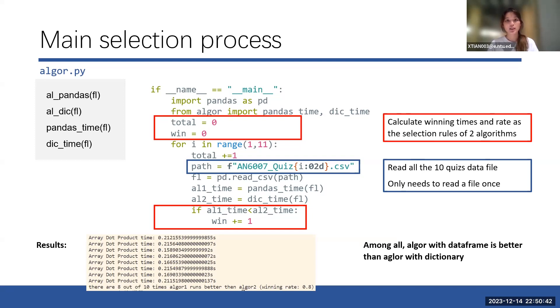And finally, I will get a winning rate. If the rate is beyond 50%, I will say algorithm 1 is better. And then I run through all the 10 quizzes data files to check out the winning rate. The final winning rate will be 80%. So it means that the algorithm with the dataframe will be selected in the final lesson file.